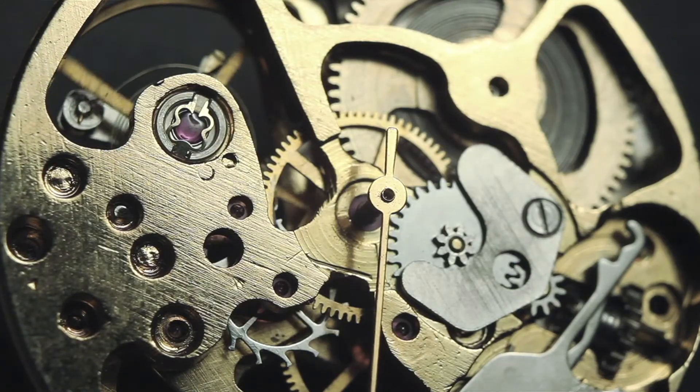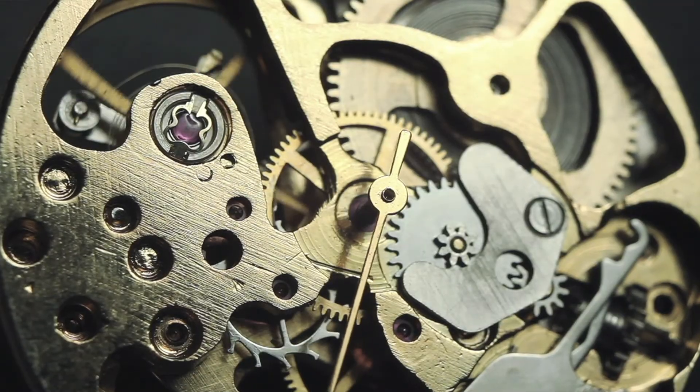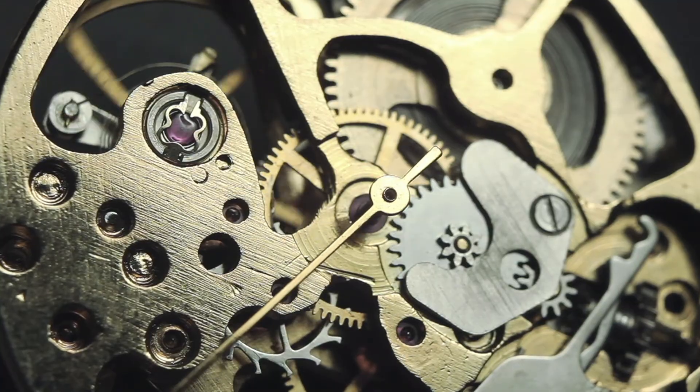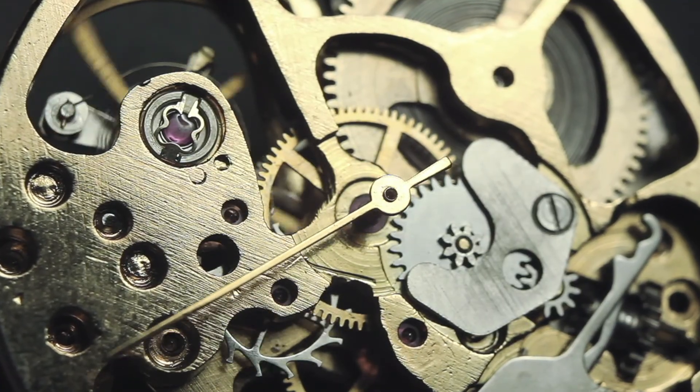More complicated automatons use dozens, if not hundreds, of tiny parts to make it look like they're operating on their own. In addition to cranks and cams, automatons like watches automatically tick using gears, levers, and links. Automaton watches are still made and used today.